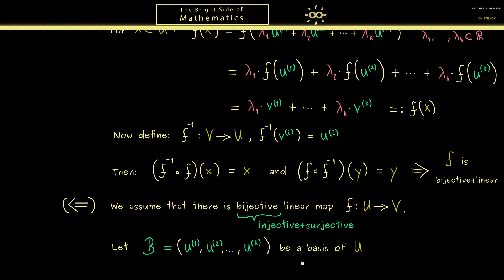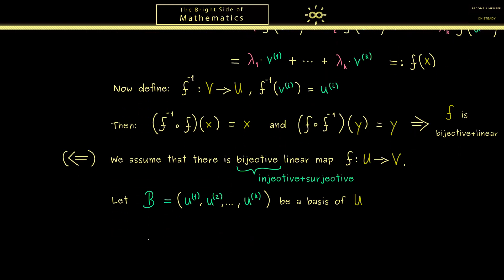Now of course in order to do this we first start with a basis on the left hand side. So let B be a basis of U. And then you know the goal now would be to show that a basis in V has also K elements. Hence the only thing we have to do now is to construct a family in V. And this is not complicated at all because we have our function F and can just apply this to all the vectors U. Hence now we have a family with vectors in V that also has K elements.